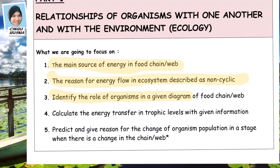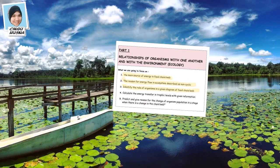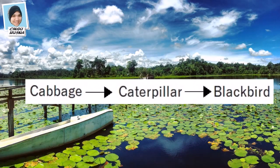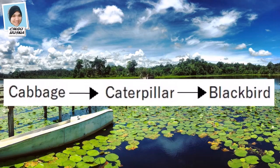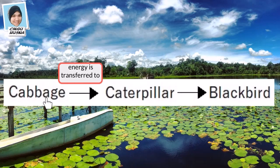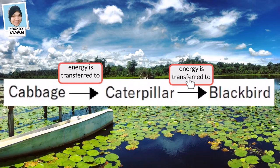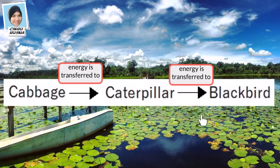Next, identify the role of organisms in a given diagram of a food chain or food web. Here I have an example of a food chain. The arrow means energy is transferred to — so the energy from the cabbage is transferred to the caterpillar. Energy is transferred from one organism to another by feeding, which means the cabbage is eaten by the caterpillar and the caterpillar is eaten by the blackbird.